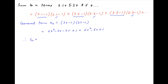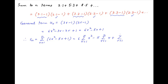Therefore, the sum to n terms of the given series, Sₙ, is equal to the summation of Uᵣ, which equals the summation of (6r²−5r+1), equal to 6 times summation of r² minus 5 times summation of r plus summation of 1, where r goes from 1 to n. Putting in the standard values, Sₙ equals 6·[n(n+1)(2n+1)/6] minus 5·[n(n+1)/2] plus n.